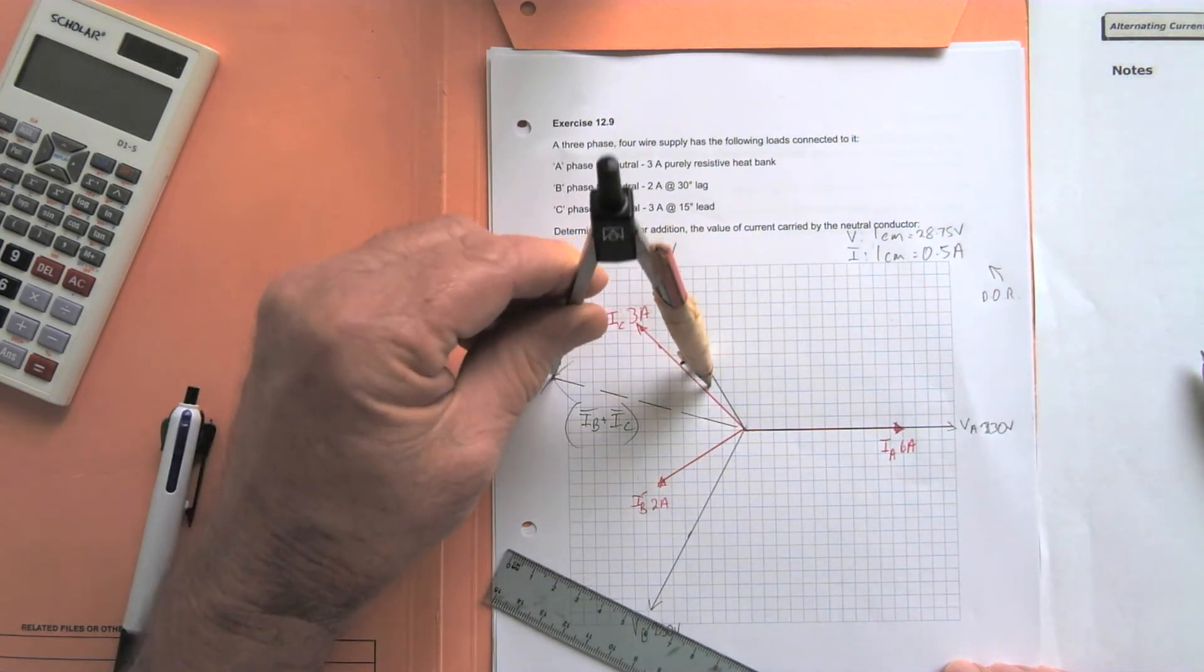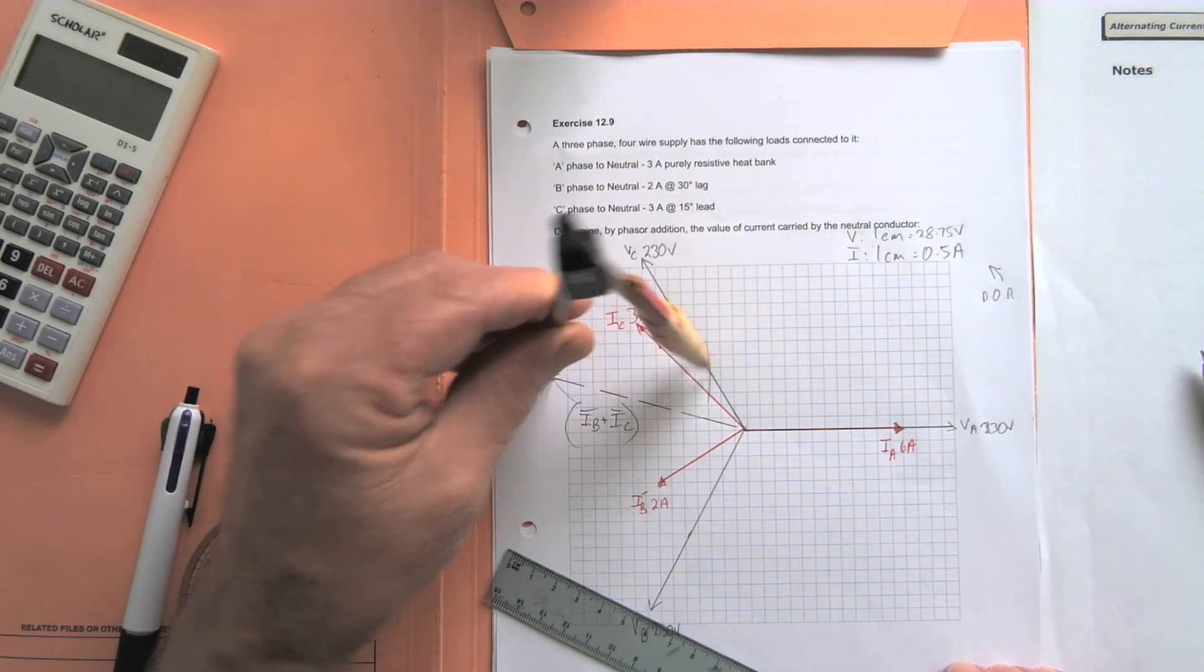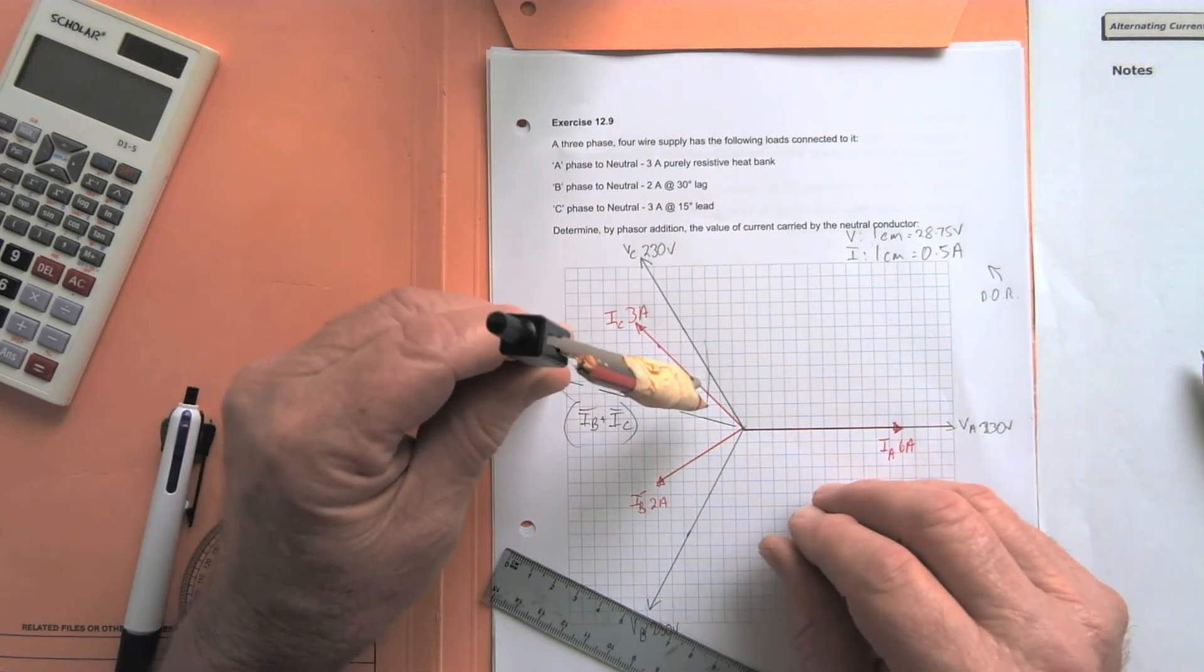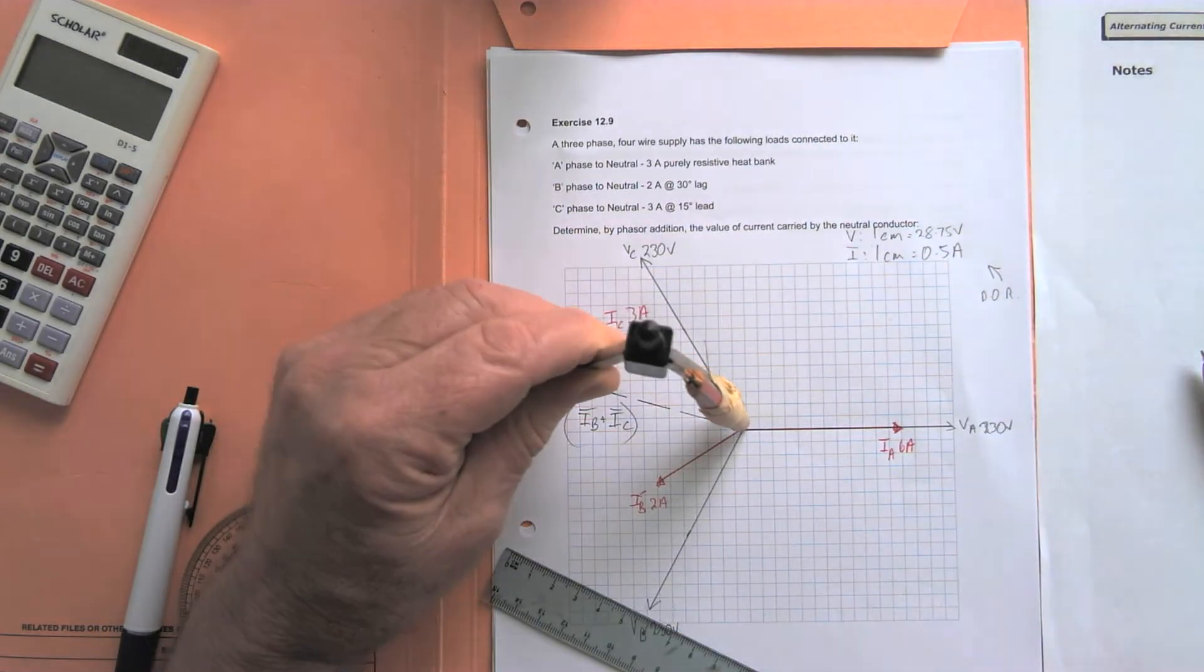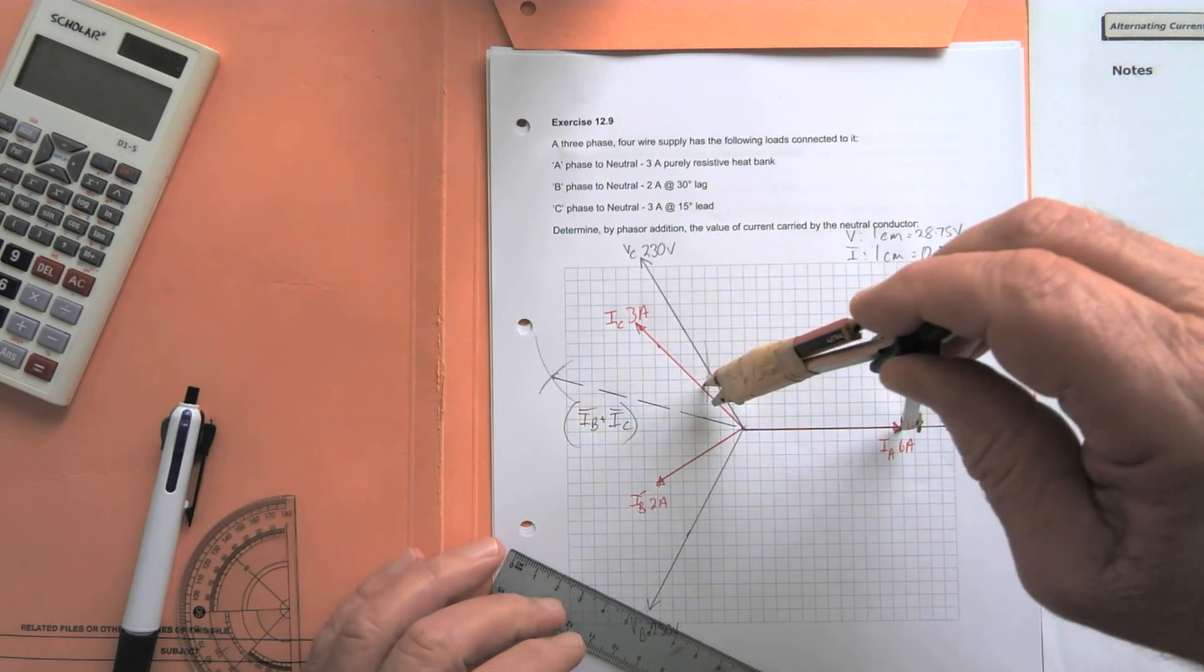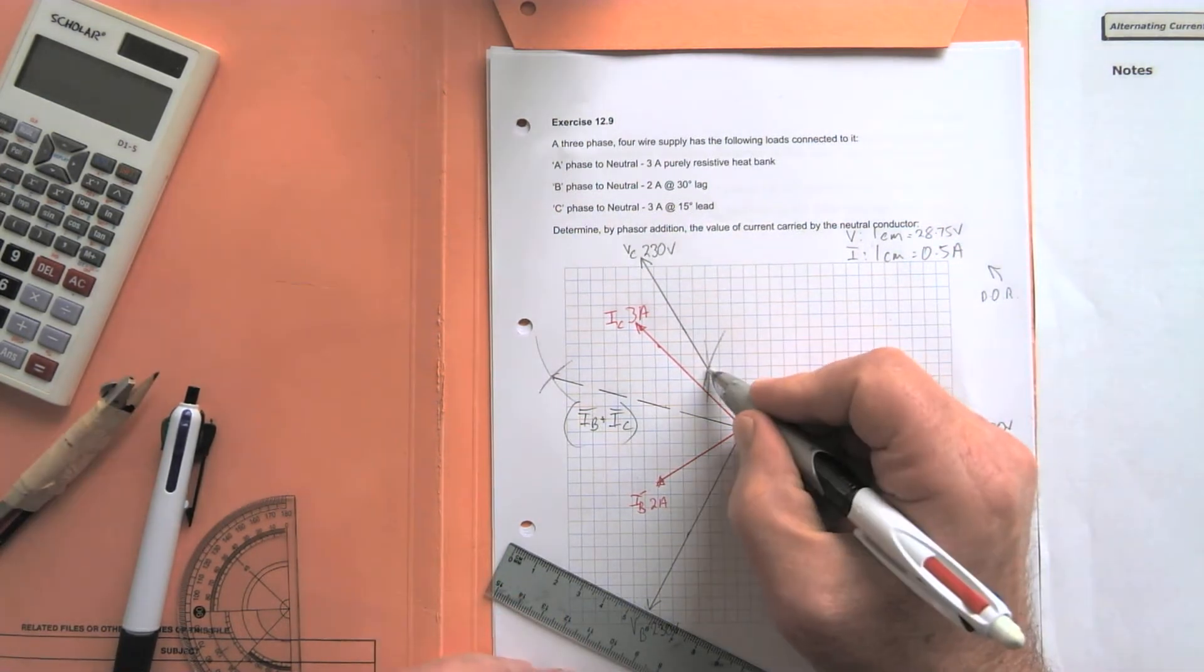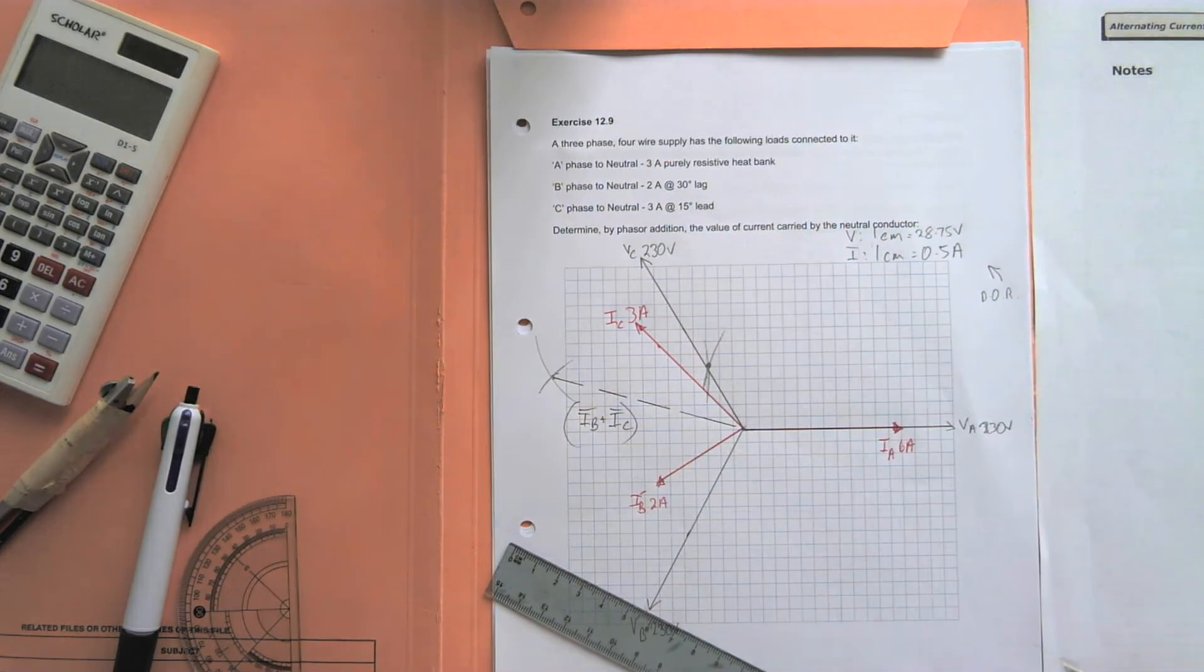And then we take the length of that resultant there and come to the tip of IA to complete the parallelogram. And where those two points meet in there, back to the star point, is your value of neutral current.